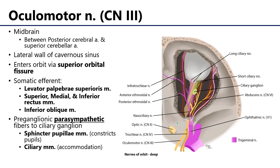Meaning, if there's any sort of impingement from either of those arteries, if there's an aneurysm, it's going to affect downstream the targets of the oculomotor nerve. The oculomotor nerve travels within the lateral wall of the cavernous sinus, and it enters the orbit via the superior orbital fissure.